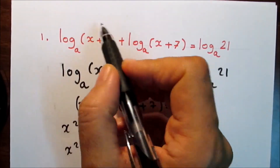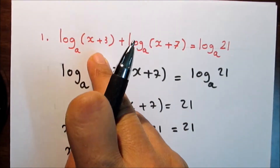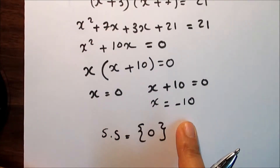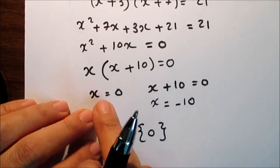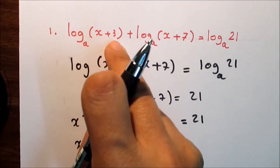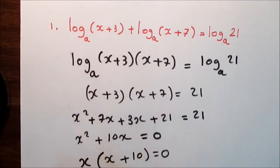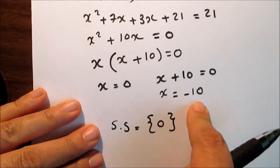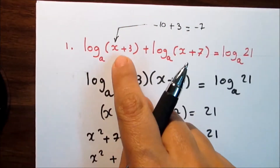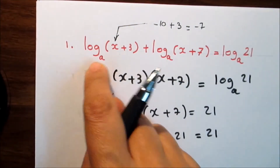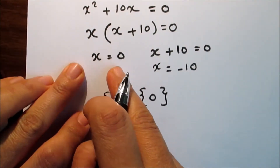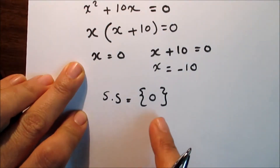The number inside the logarithm must be a positive number not equal to zero, so we must check whether each solution satisfies that condition. For x equals 0: the number inside the first logarithm is 0 plus 3 equals 3 — positive, so it's okay. For x equals negative 10: negative 10 plus 3 equals negative 7, which is negative inside the logarithm, so this solution is refused. Therefore the solution set is {0}.